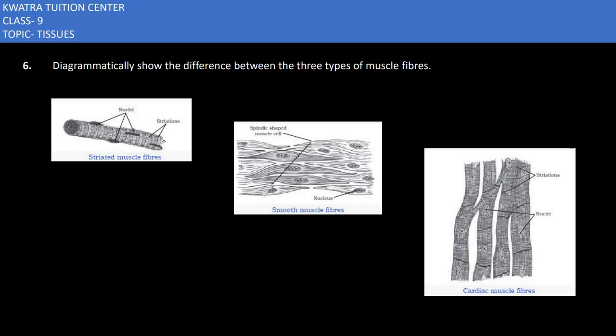Now starting with the sixth part here, it says diagrammatically show the difference between the three types of muscle fiber. Now we know three types of muscle fiber are striated, smooth, and cardiac.